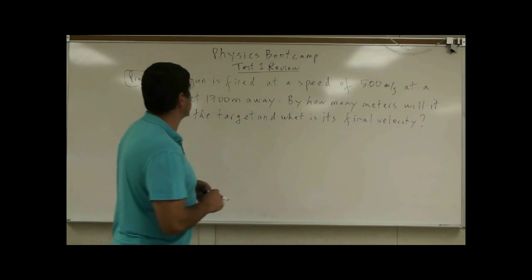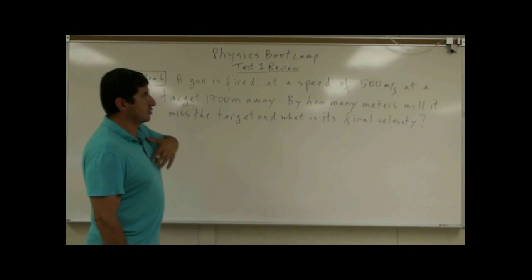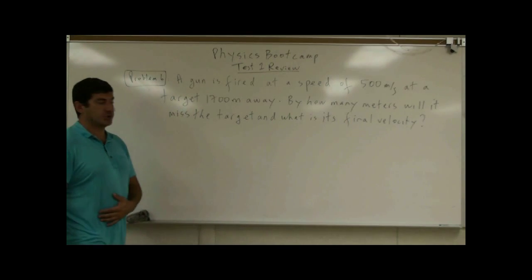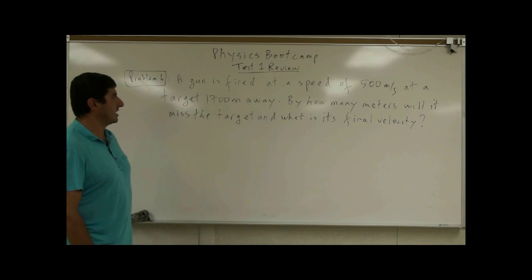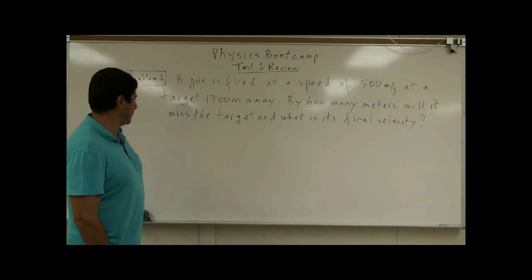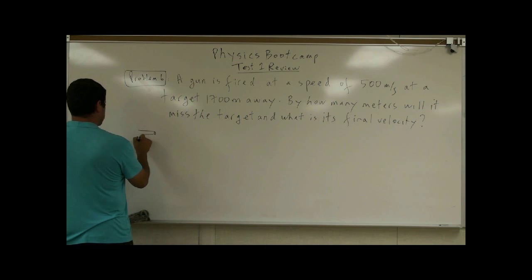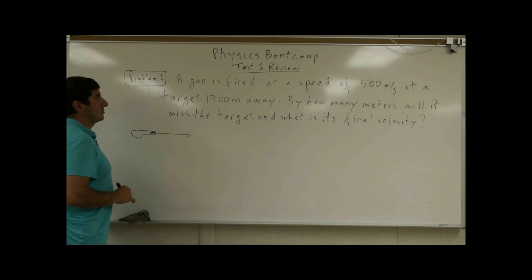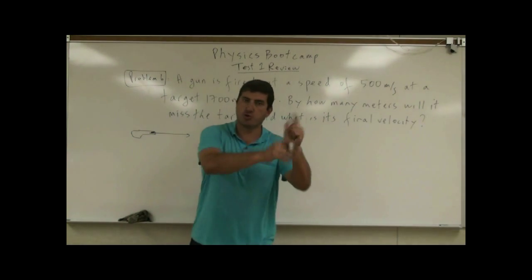Now we get to problem number six for test run review. A gun is fired at a speed of 500 meters per second at a target 1700 meters away. By how many meters will it miss the target and what is its final velocity? So we're assuming here is the gun, it shoots a target here. And from the language of the problem, we're assuming that it's shot horizontally.